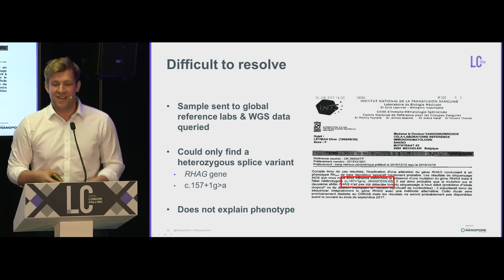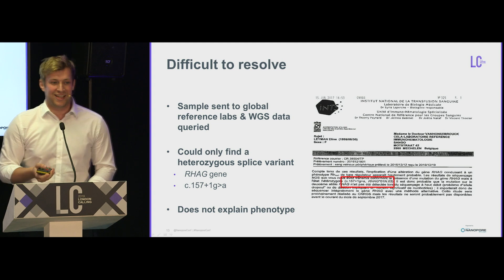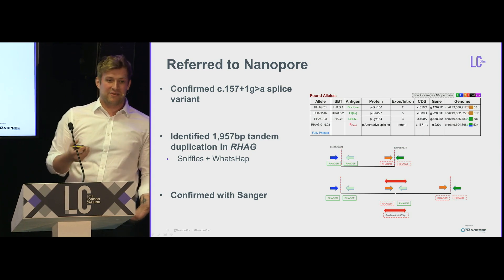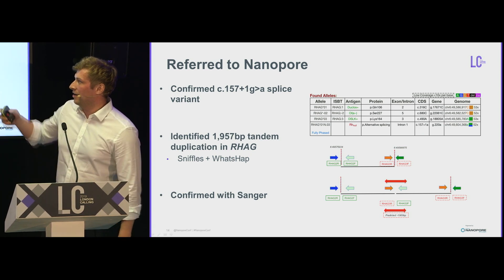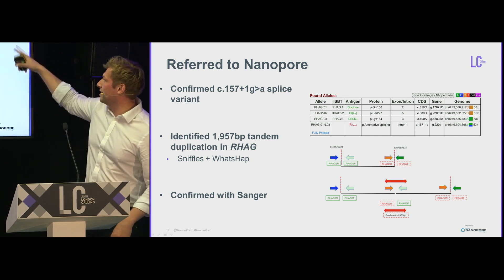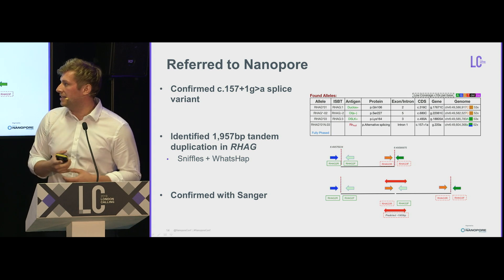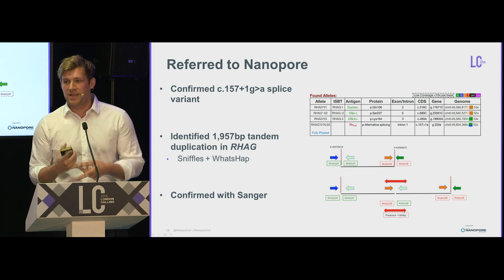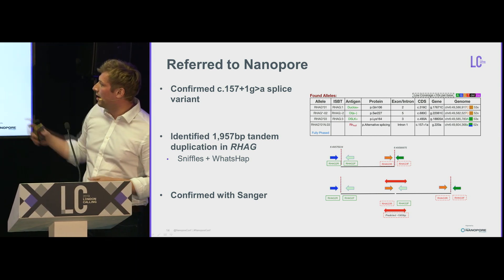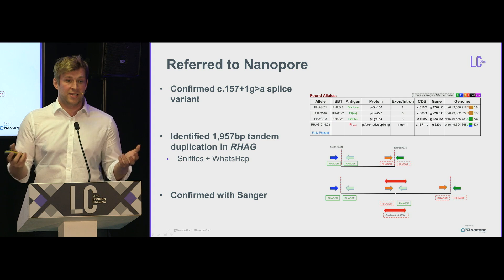My professor told me I wasn't passing my viva unless I solved this case. I referred it to Nanopore, having had some success resolving complex cases there before. We confirmed the splice site variant first. Then we also identified about a 2,000 base pair tandem duplication in RHAG. The beautiful thing about Nanopore was we were able to phase it — it wasn't in cis, it was in trans. We used Sniffles and WhatsApp to do that, then confirmed with Sanger sequencing, and resolved why she has this incredibly rare blood.